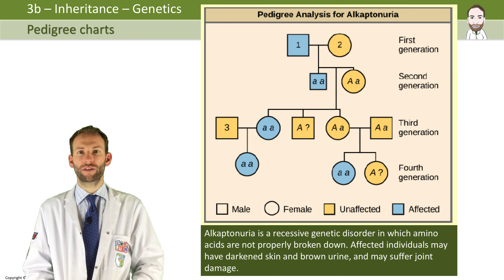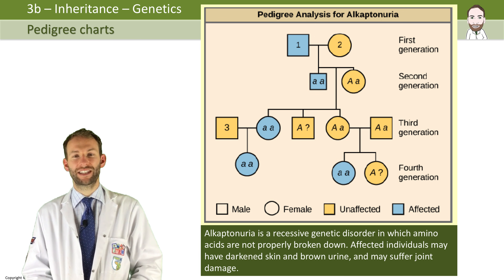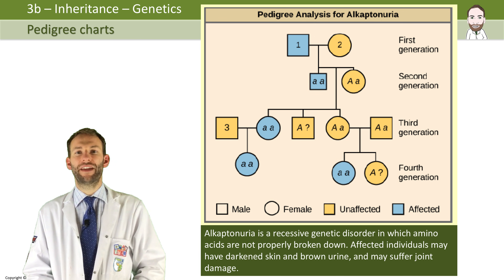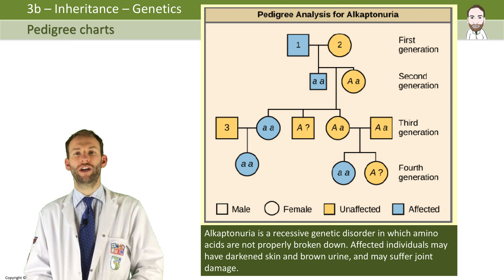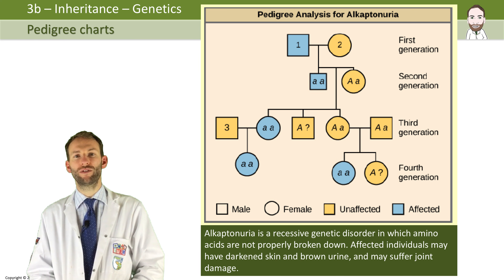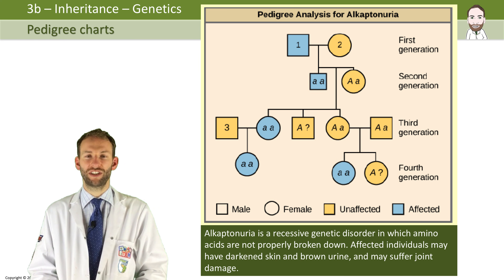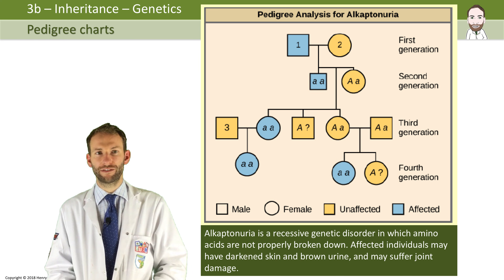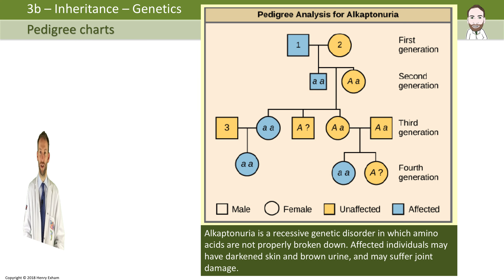For number three, it also has to be big A, little a, for the same reason. They don't have the disease and they definitely pass on a little a to their children, so they can't be homozygous dominant. You should be able to interpret these pedigree charts and work out what genotypes are, and whether diseases are recessive or dominant, based on the information and key that you are given.